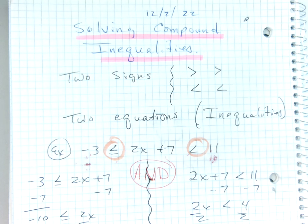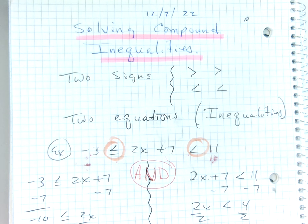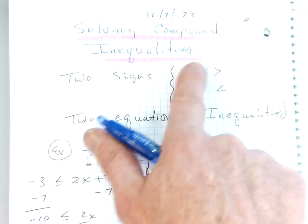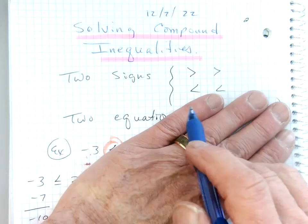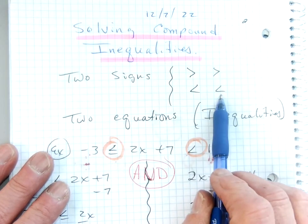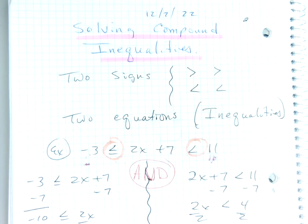Okay everybody, let's recap the lesson. We're talking about compound inequalities. The whole idea is with compound inequalities there's going to be two signs, either greater than and greater than, or less than with another lesson. So you've got basically two equations.